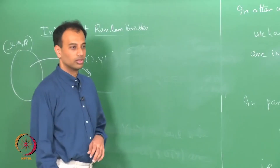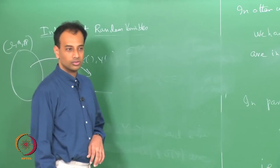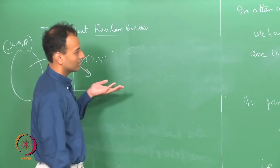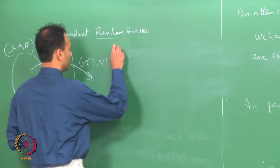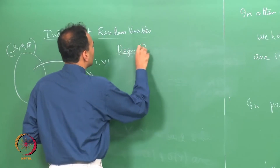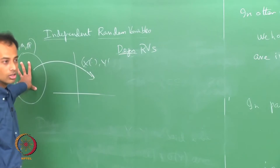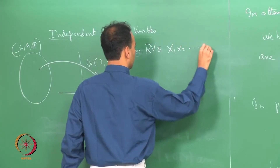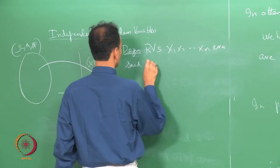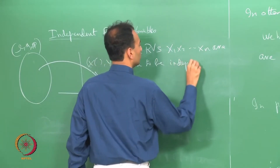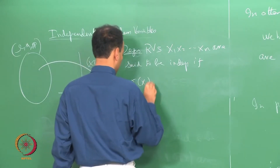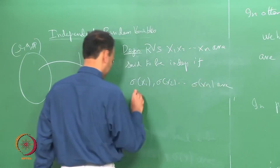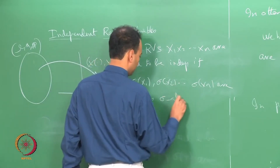How about if you have more than 2 random variables? The same story — you can just give the same definition now. So, let me give the definition for n random variables. All random variables x1 through xn live on the same probability space (Ω, F, P). Random variables x1, x2, ..., xn are said to be independent if σ(x1), σ(x2), ..., σ(xn) are independent sigma algebras.